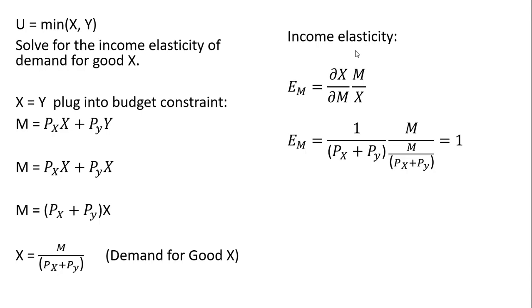So now we're going to calculate the income elasticity, which is going to be given by this formula. We're going to first take the partial derivative of the demand function for good x. So down here, we're going to take the derivative of this with respect to m. And then we're going to multiply it by m, income, divided by x, the demand for good x.